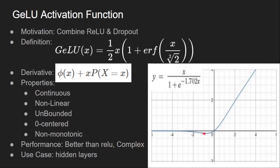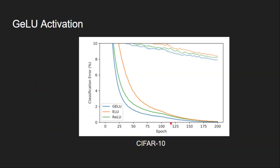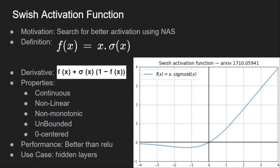If you observe the graph, the curve decreases a bit and then starts increasing, making it non-monotonic in nature. Coming to performance, GELU performs much better than ReLU and exponential linear unit. On the CIFAR-10 dataset classification error, GELU activation converges much faster compared to the other two. It is also used only for hidden layers.